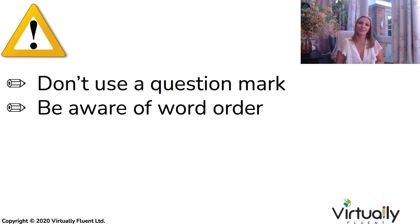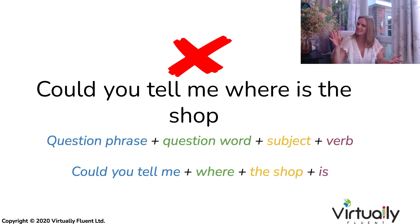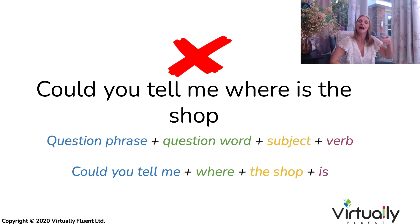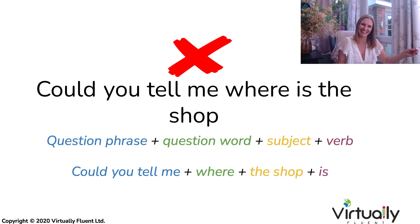The second thing is to be aware of the word order, especially with the verb 'to be'. I see so many mistakes with the verb 'to be'. For example, 'Could you tell me where is the shop?' — no, that doesn't follow the indirect question structure. Start with the question phrase: 'Could you tell me?', question word: 'where', next is the subject: 'the shop', and finally our verb: 'is'. 'Could you tell me where the shop is?' This is so common if you are a tourist asking somebody where something is: 'Excuse me, could you tell me where such-and-such is?' So please be careful with the correct word order, especially with the verb 'to be'.